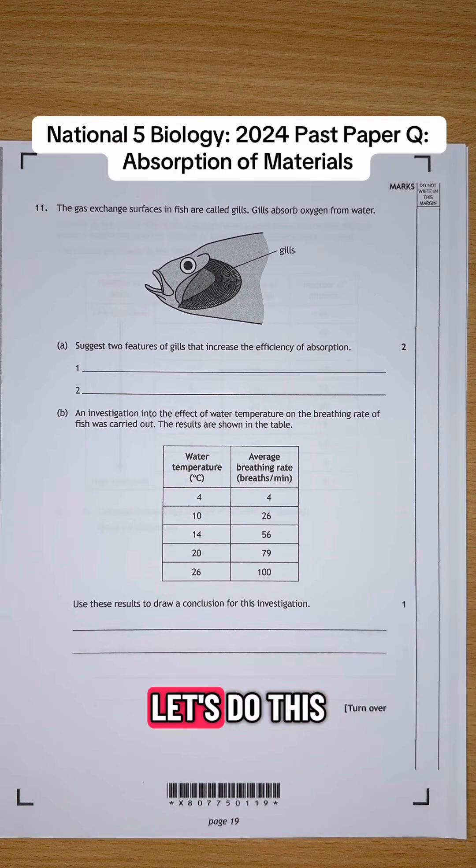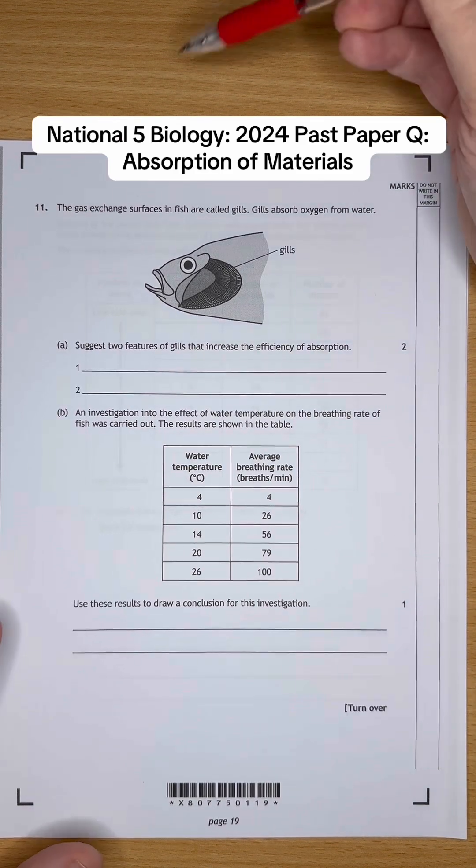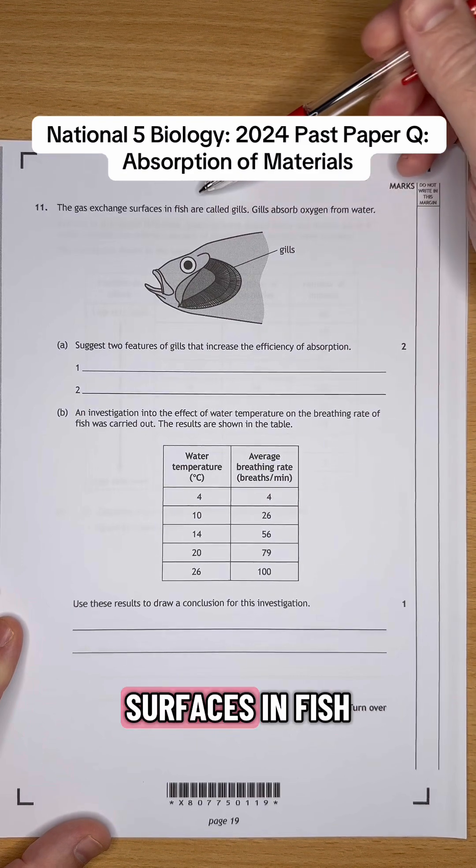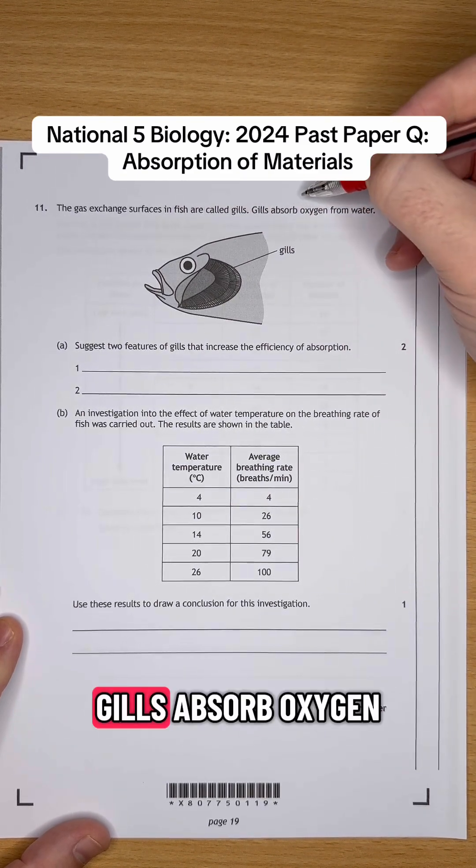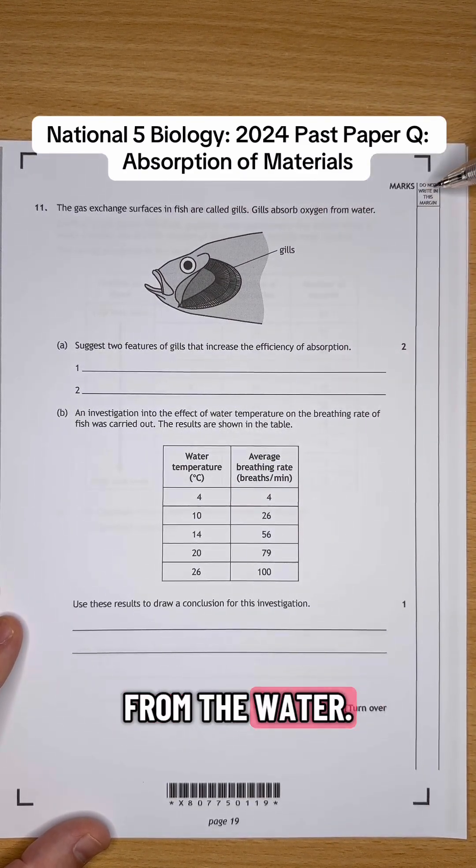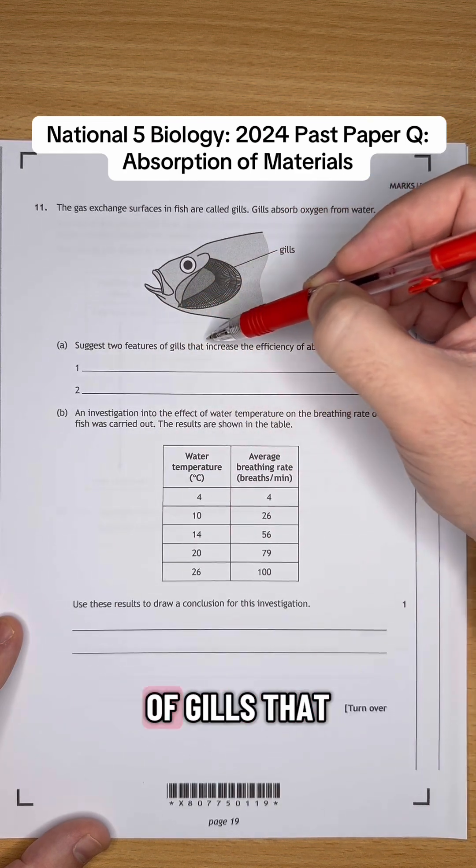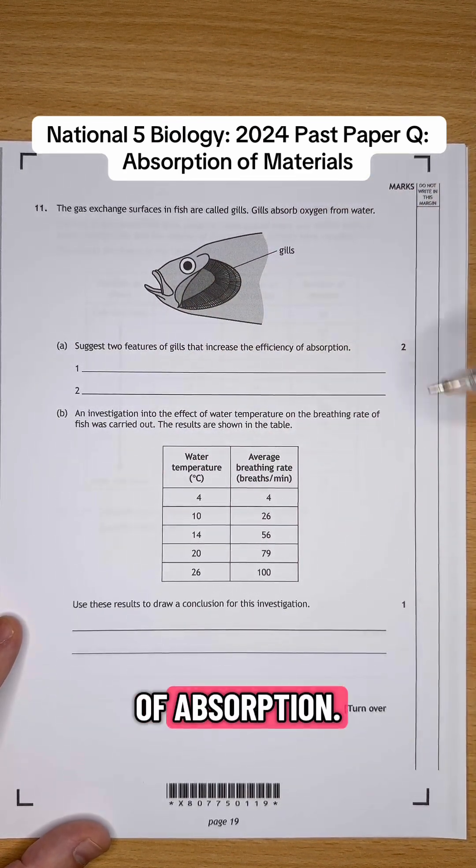National 5 biology students, let's do this past paper question together. This one says, the gas exchange surfaces in fish are called gills. Gills absorb oxygen from water. Suggest two features of gills that increase the efficiency of absorption.